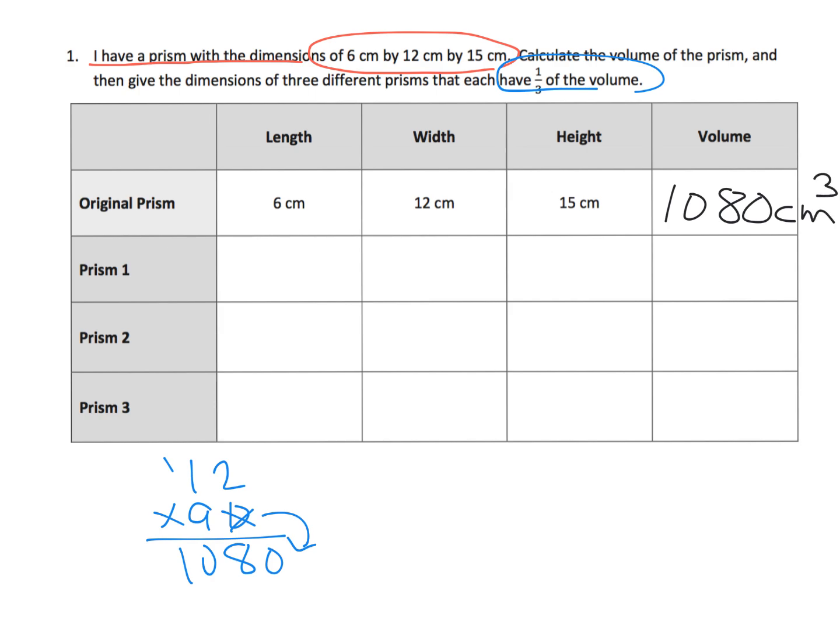So that's the volume of our original prism. Now we need to know what's one-third of that. So we learned in prior modules that one-third of 1,080 means one shortcut for doing that is to divide 1,080 divided by 3, and we're going to get 360.